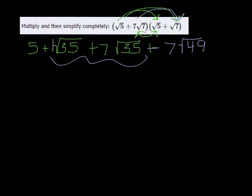number out in front of the square root of 35, we can think of it as 1 times square root of 35 plus 7 times the square root of 35 equals 8 square root of 35. I was jumping ahead of myself. So we have 5 plus 8 square root of